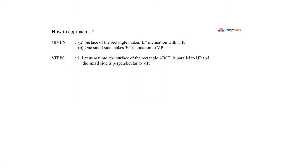How to approach. Given: (A) the surface of the rectangle makes 45 degrees inclination with the horizontal plane, and (B) one small side makes 30 degrees inclination to the vertical plane.